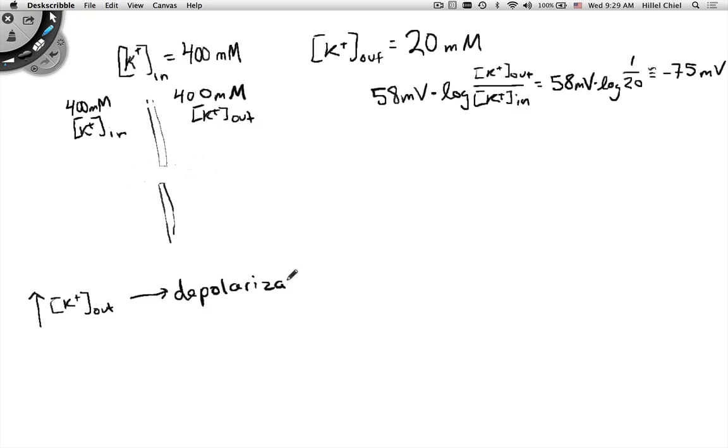What about the Nernst potential? That's why I said we could do this in our heads. What's the ratio outside to in? It is 400 over 400, so it's 1. What's the log of 1? It's 0. And so 58 millivolts times 0 is 0, which means that the Nernst potential is 0. That wasn't so hard.